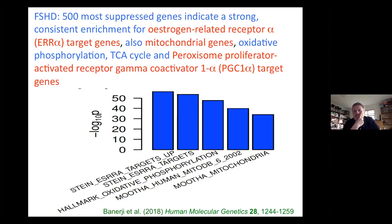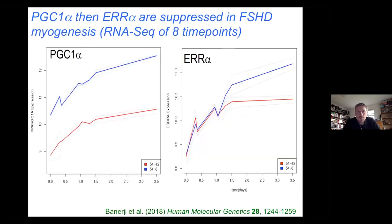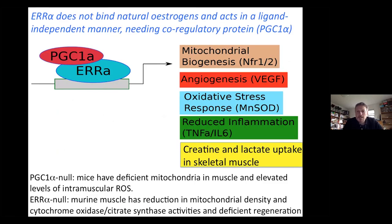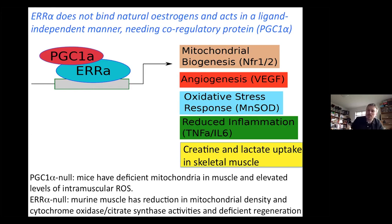The 500 most suppressed genes revealed that ERRα receptor and PGC1α were the things that jumped out as perturbed during myogenesis in FSHD. PGC1α is clearly repressed all the way through in FSHD. ERRα is not repressed initially but then catches up. ERRα is a transcription factor important for generating mitochondria and energy metabolism, and PGC1α is a cofactor that needs to bind ERRα to activate it — so the two are closely linked. From PGC1α-null mice we know there are deficient mitochondria and elevated ROS, and from ERRα-null mice there are fewer mitochondria and deficient regeneration. So if you affect these pathways, you affect muscle regeneration.